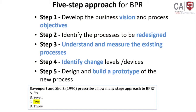The 5-step approach for BPR. When you are going to develop a BPR process, there are 5 approaches. Step 1: develop the business vision and process objectives. When developing a strategy plan, your organization has to have a good vision and objectives to achieve that. You should have a very good vision and process objectives as the first step in doing a business process re-engineering approach.